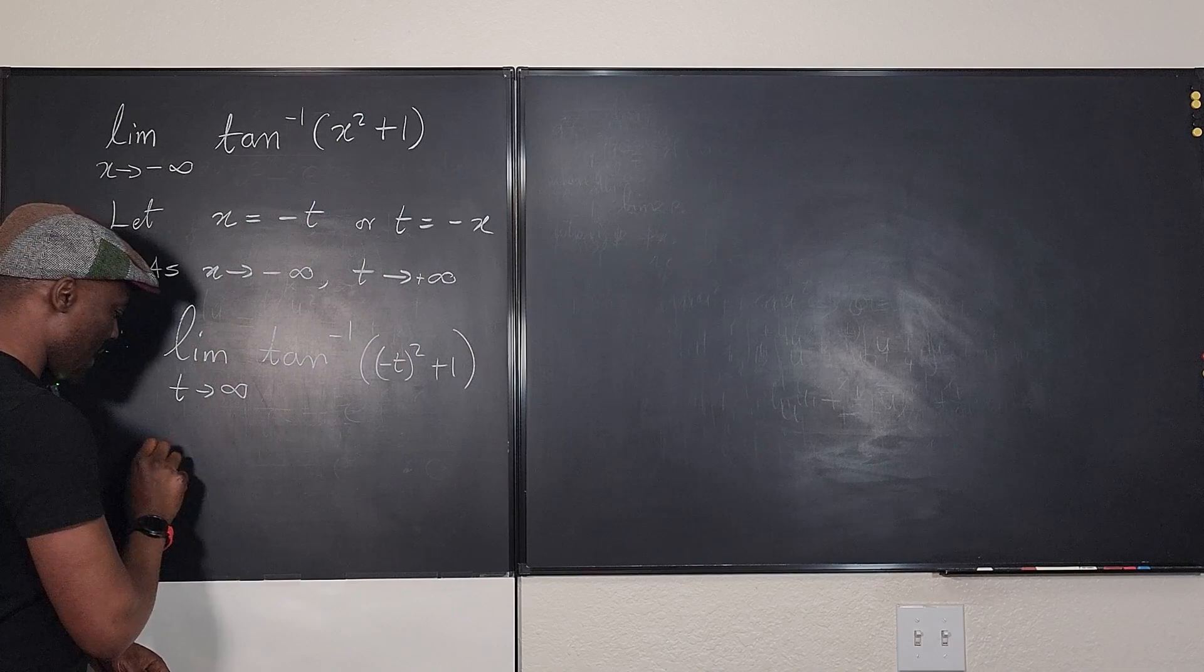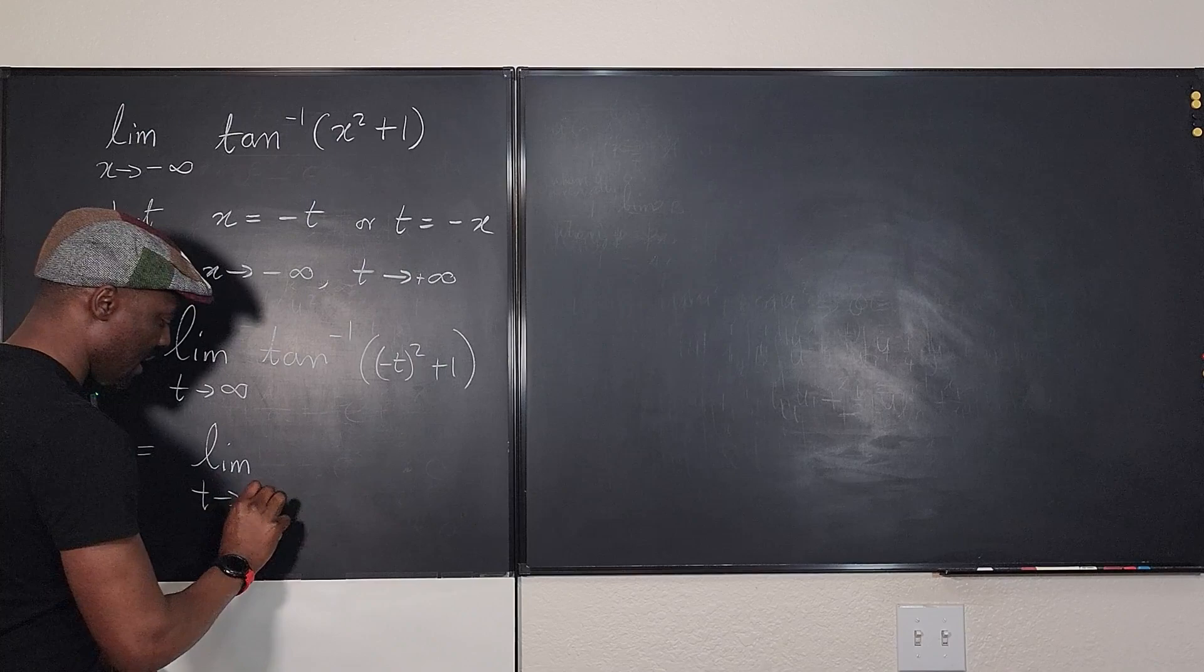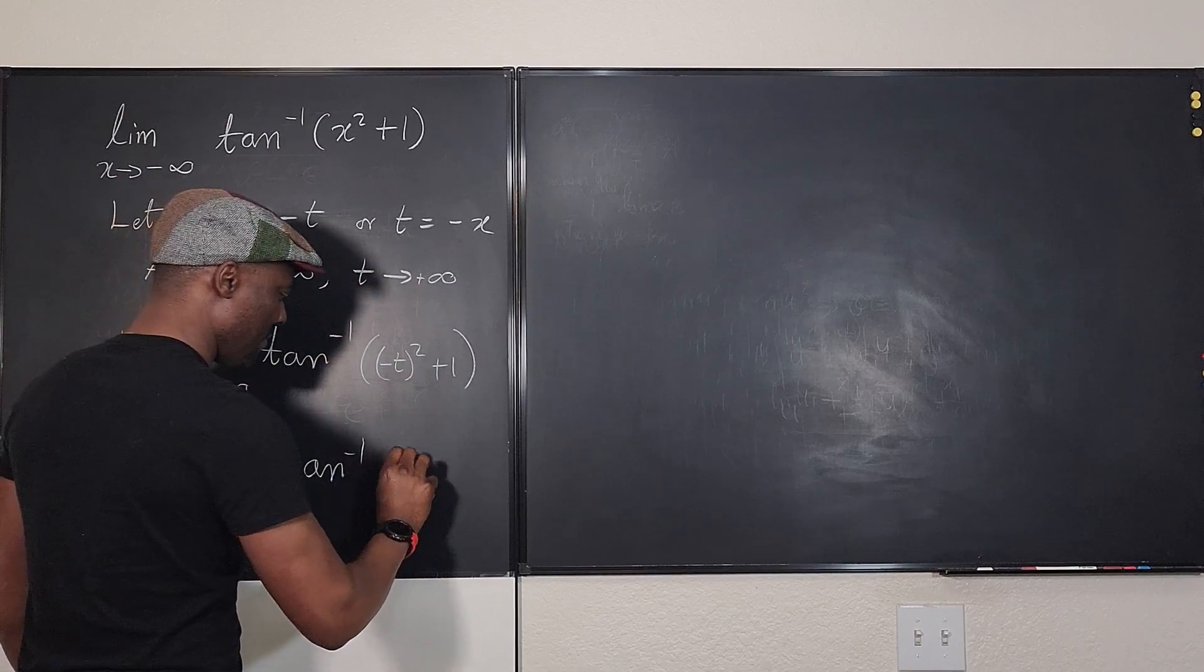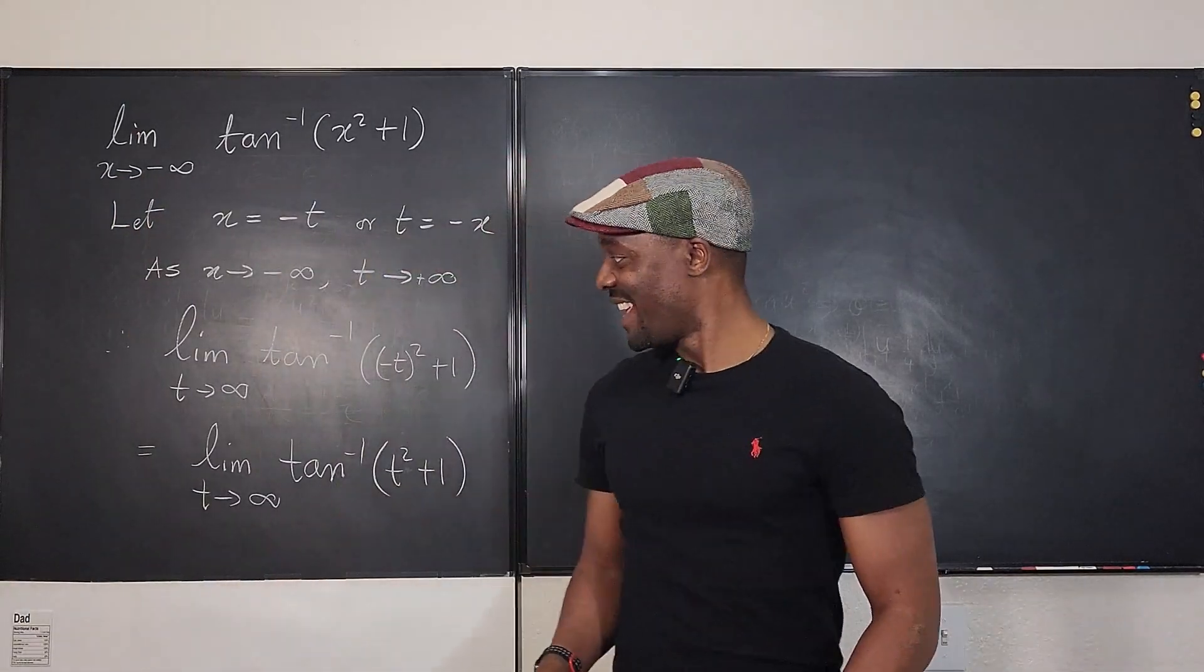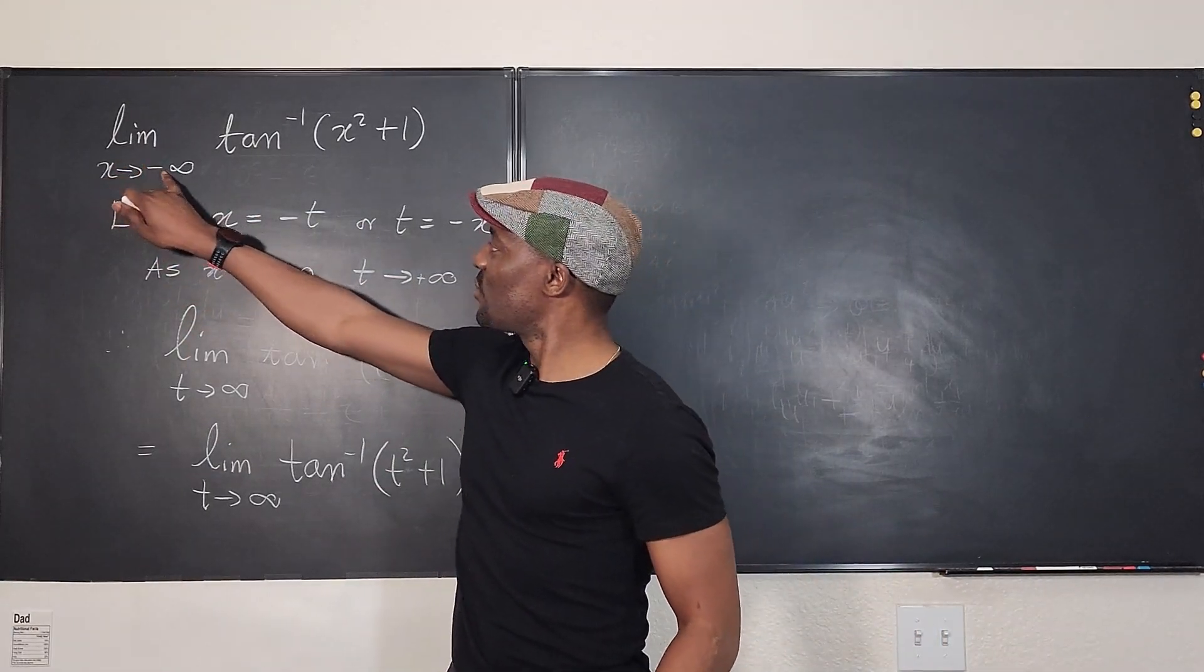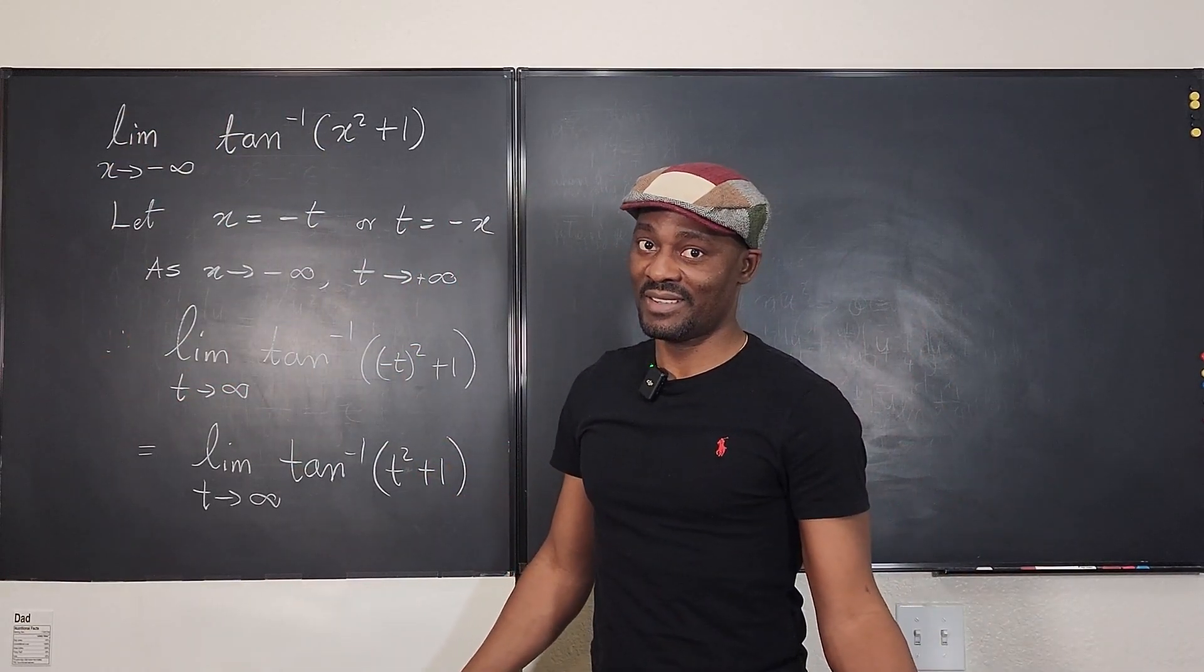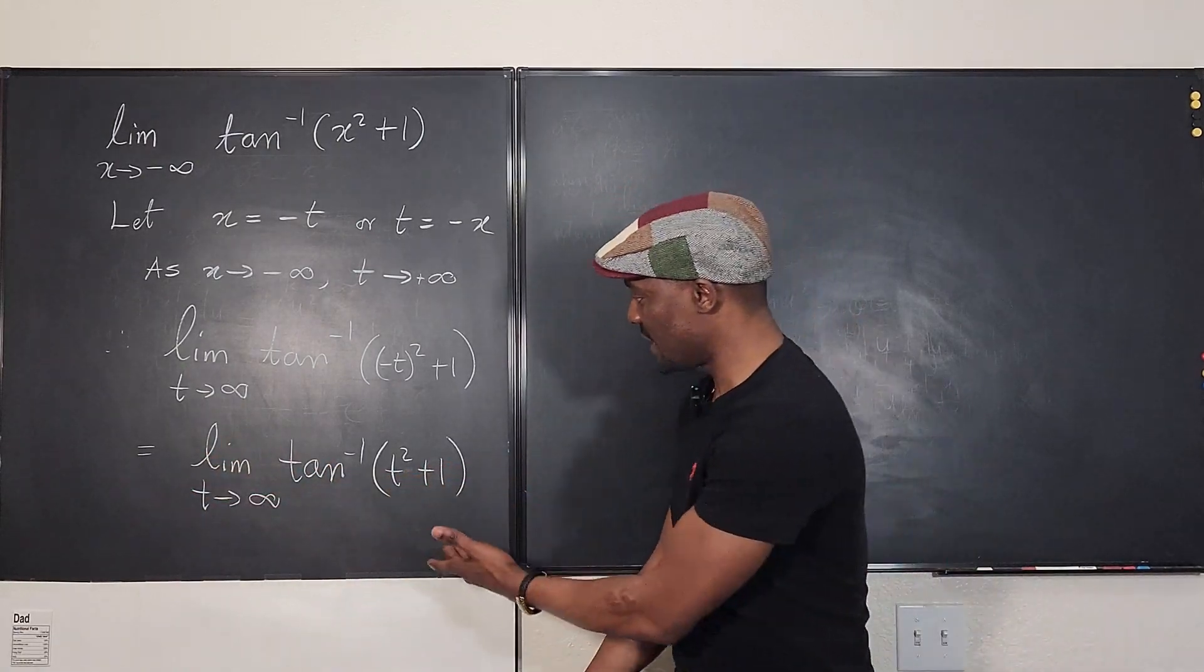Which as you can see is the same thing as the limit as t goes to infinity of arctan, and this is going to be t squared plus one. You see we really didn't change anything and you could have seen that from the beginning that when this one is going to negative infinity, the square of negative infinity is going to be positive infinity. Definitely. So this is the new problem. Let's deal with this.